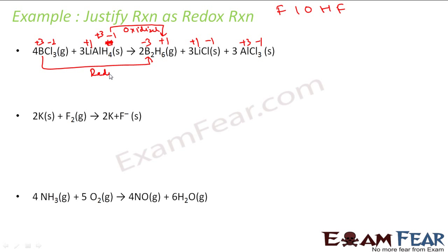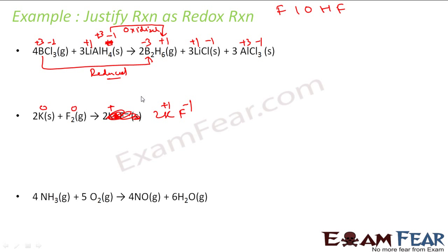Next example: K + F₂ → 2KF. K is in free state so K is zero; F₂ is in free state so F is zero. In KF, K is plus one and F is minus one. K oxidation number increases from zero to plus one — oxidation. F oxidation number decreases from zero to minus one — reduction. This is a redox reaction.